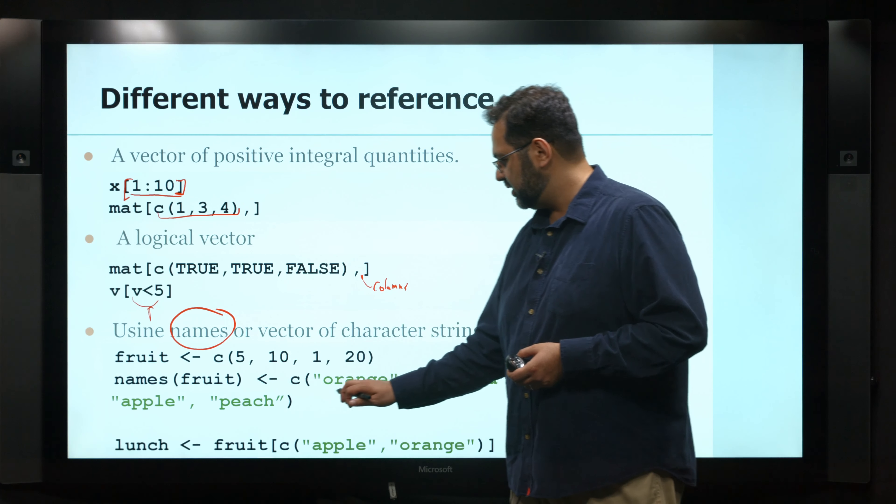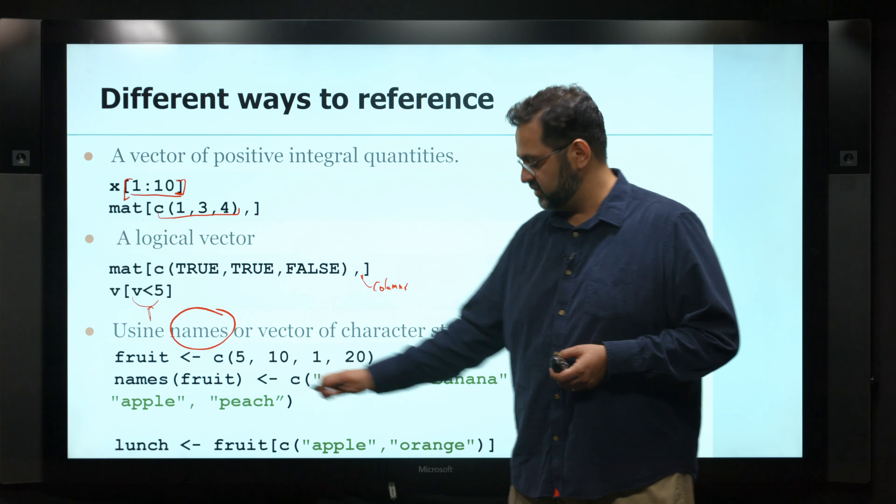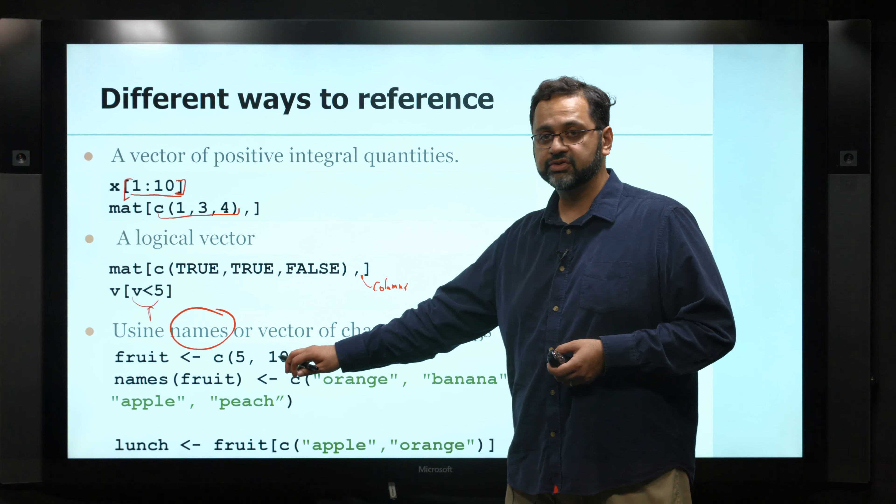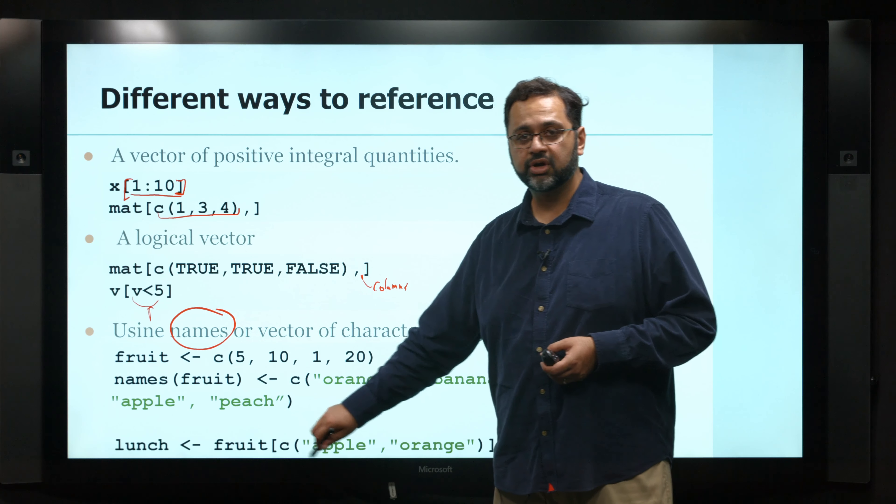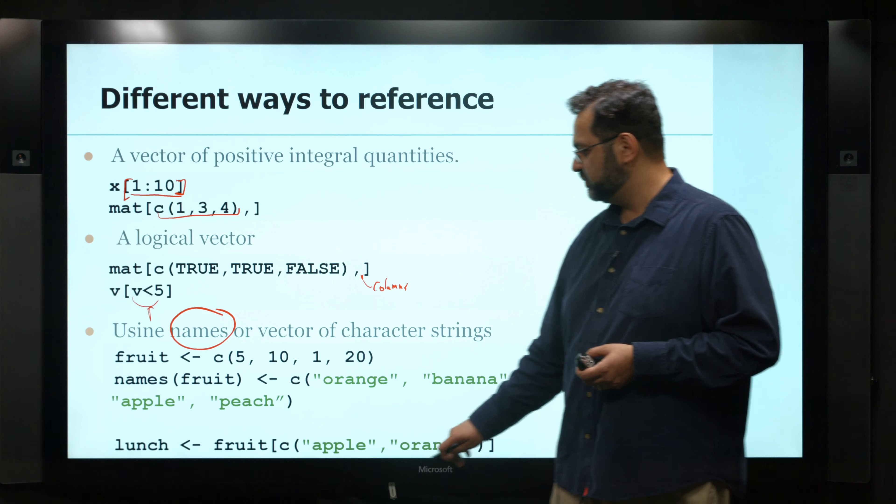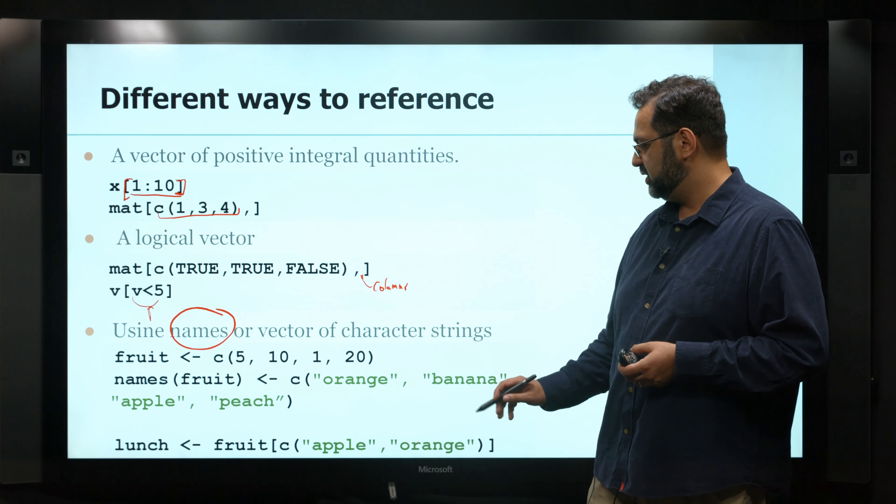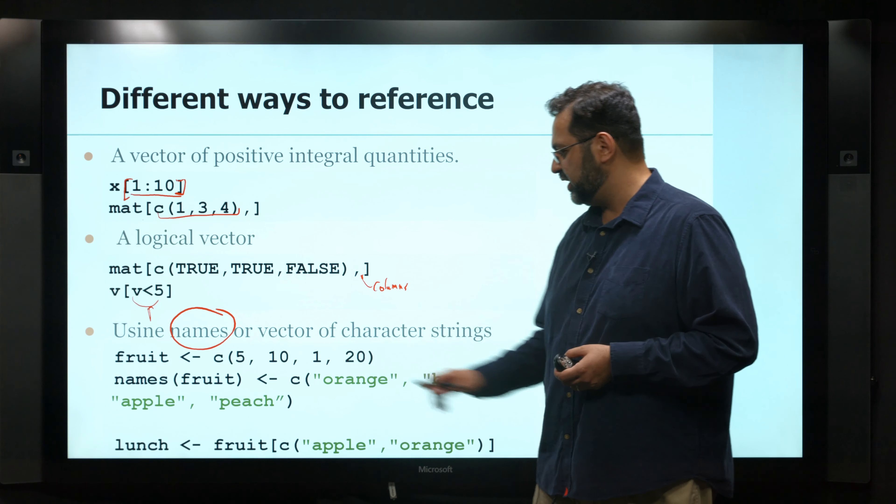So in this case, the order does matter. So the orange will be associated with the first value, the banana will be associated with the second value, and so on. And now, if you wanted to store apple and orange, this would basically give you the value for lunch. It would give you the values 5 and 1.